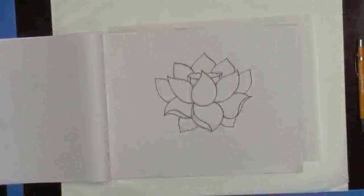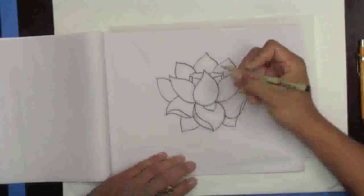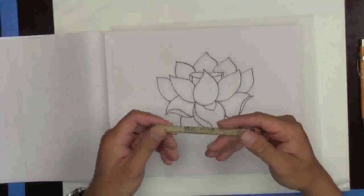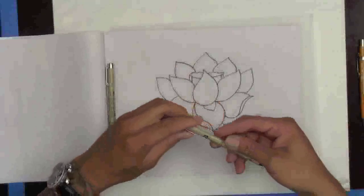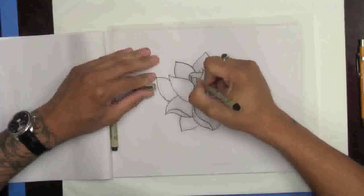Alright, there's your basic outline. So, what I'm going to do now is just start getting a Micron 5, which is a thinner tip. And then I'm going to just start doing a little bit of detailing inside here.